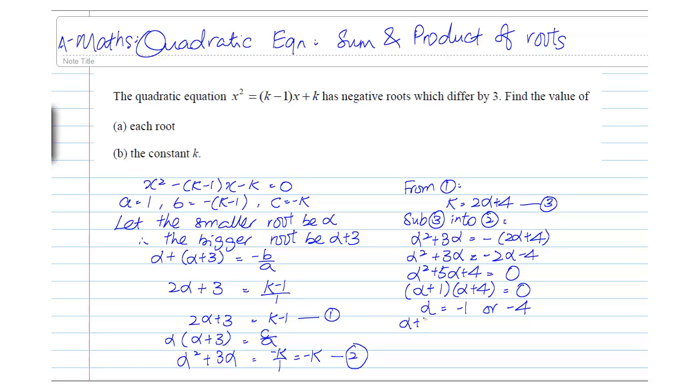When alpha is minus 1, the value of the bigger root will be 2.